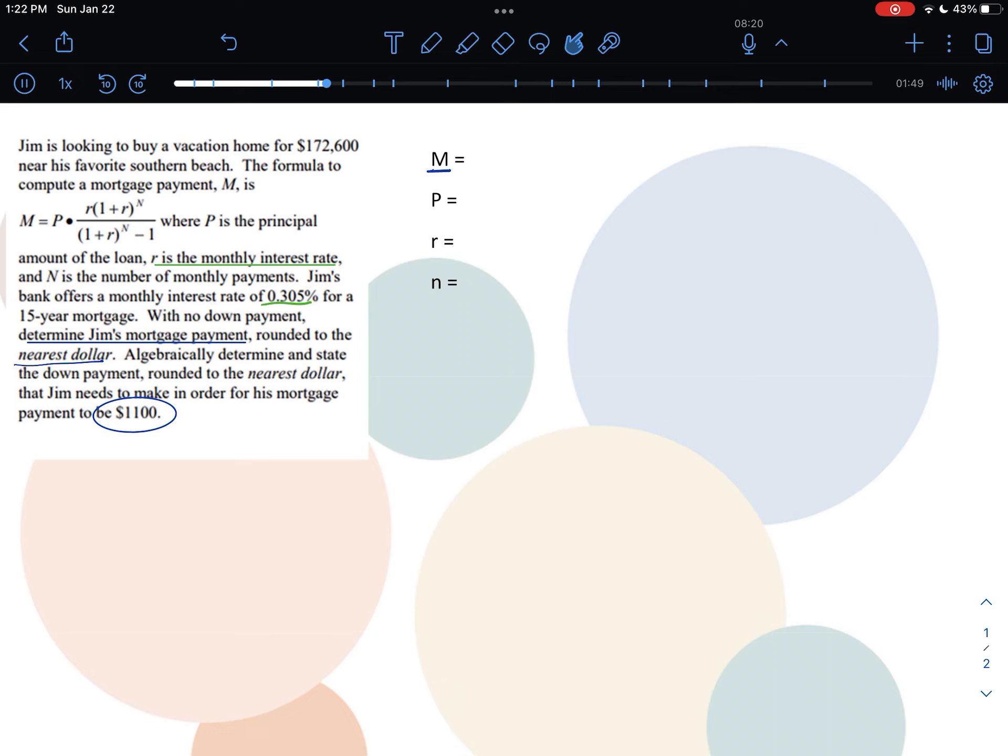The second variable that I need is the principal. The principal is the amount of the loan. That one is given to me. It is $172,600.